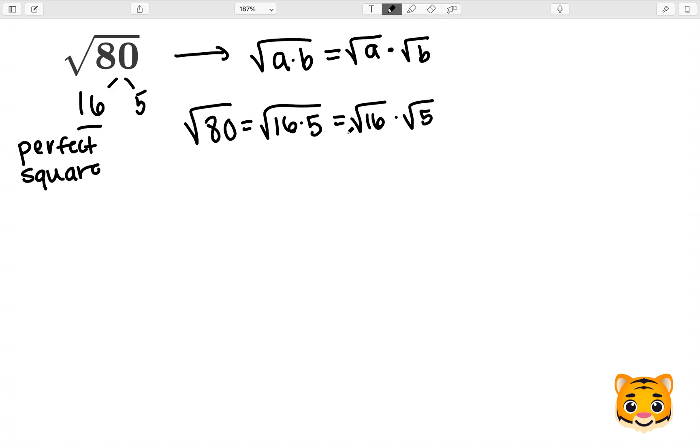Because 4 times 4 gives us 16, the square root of 16 will be 4. Therefore, the square root of 80 can be simplified to 4 times the square root of 5.